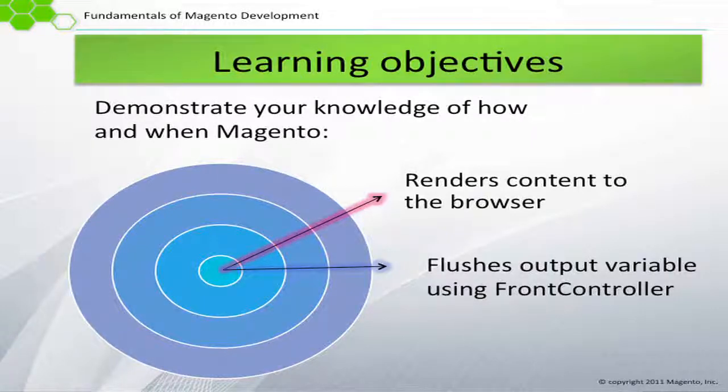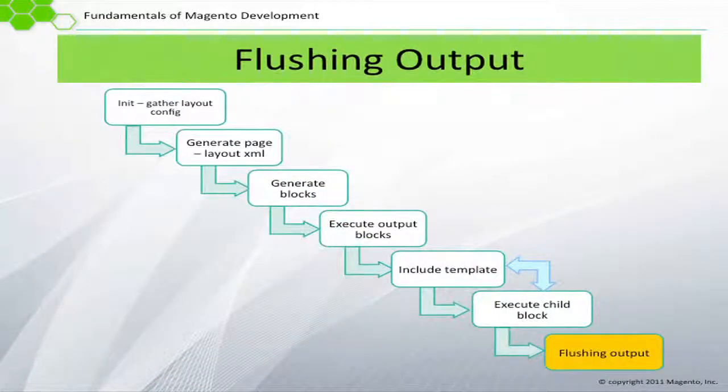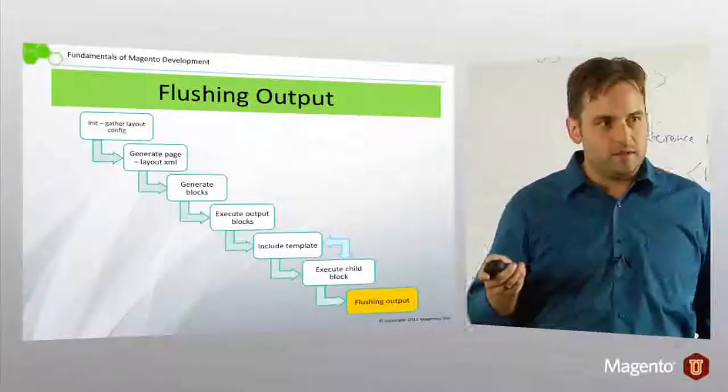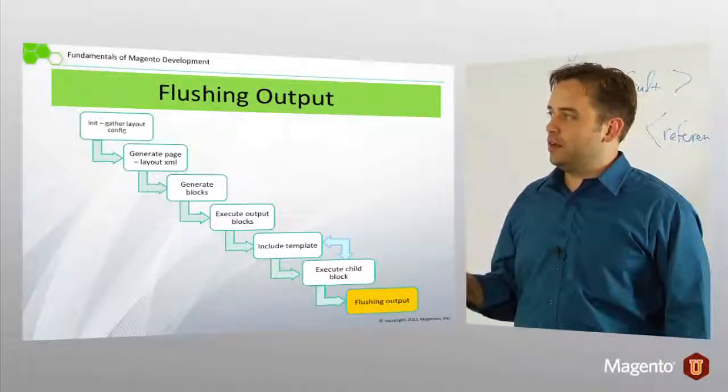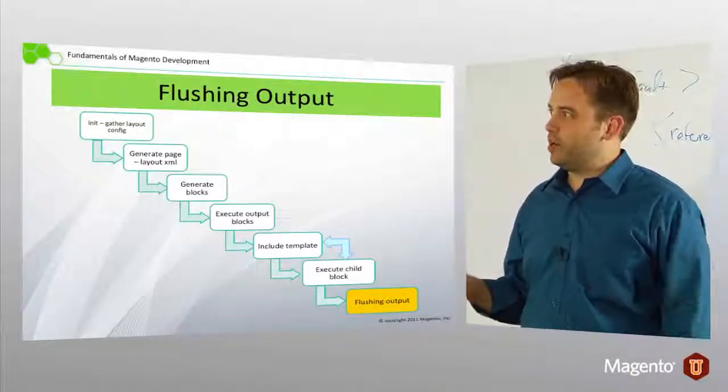How do we get output from all of this? We've walked through these steps before—get everything initialized, get to the point where we have our layout object. This load layout generates the page via layout XML.